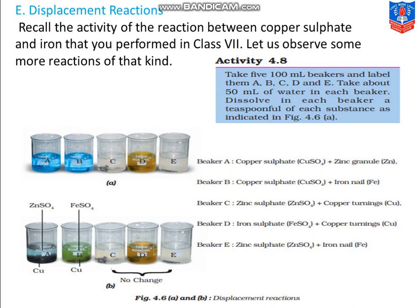Now let us observe some more reactions of this kind. First of all, there is one activity. Take 500 ml beakers and label them A, B, C, D and E. You can see students, there are 5 beakers labeled as A, B, C, D and E, as shown here in the figure.